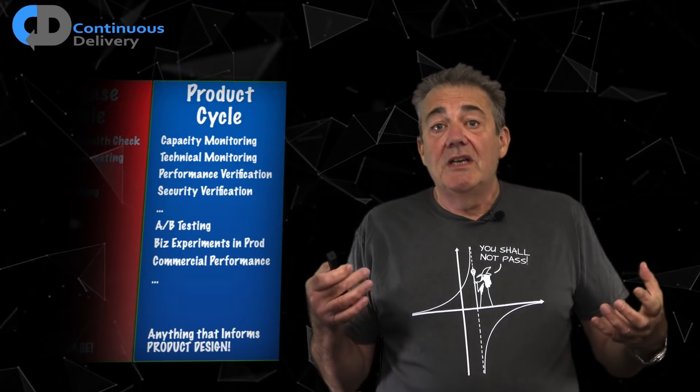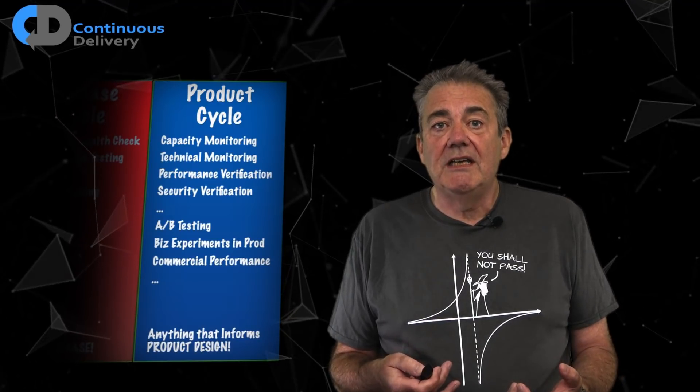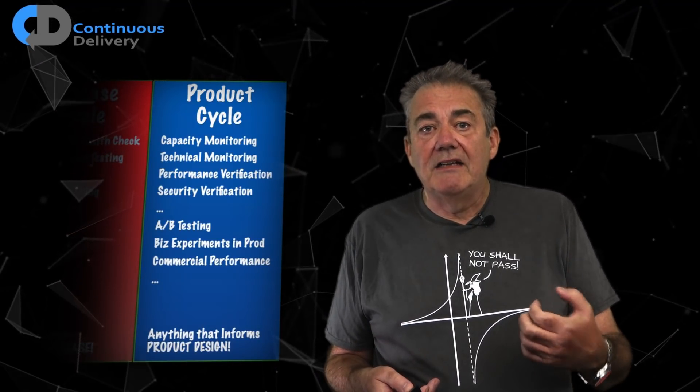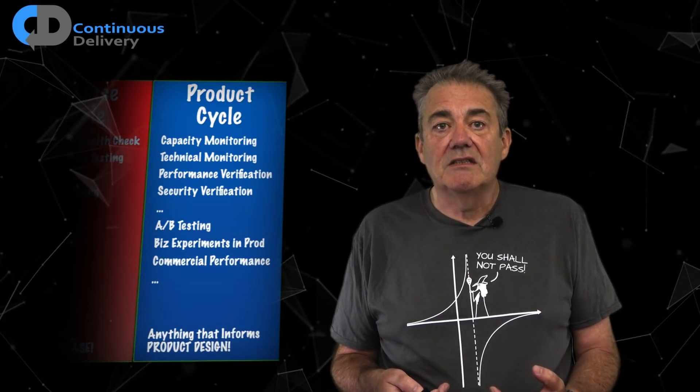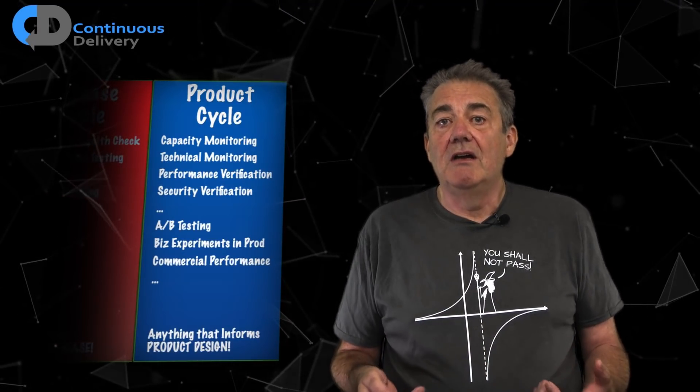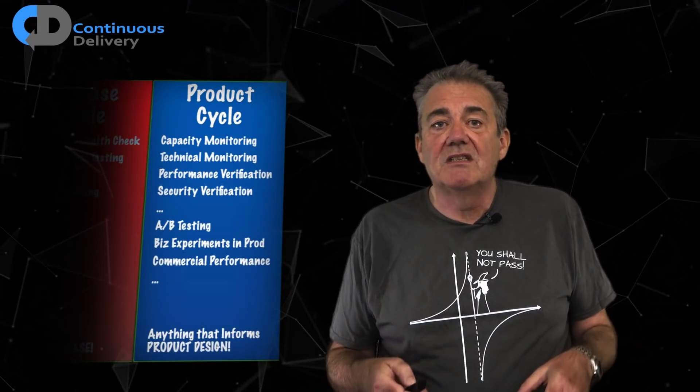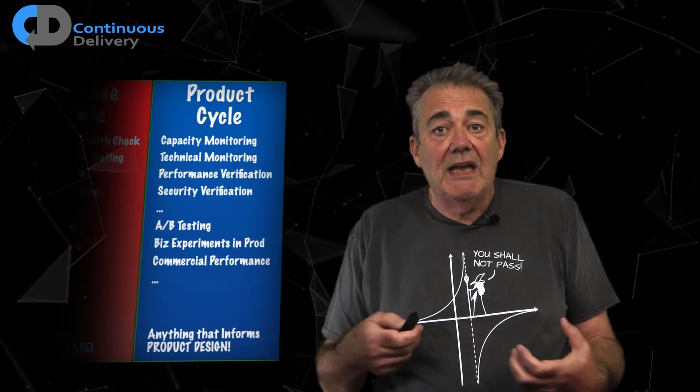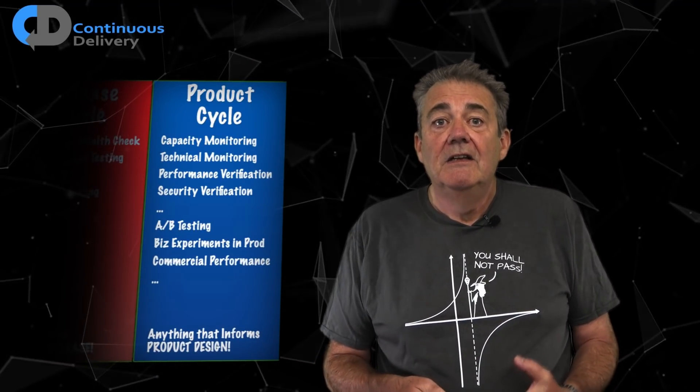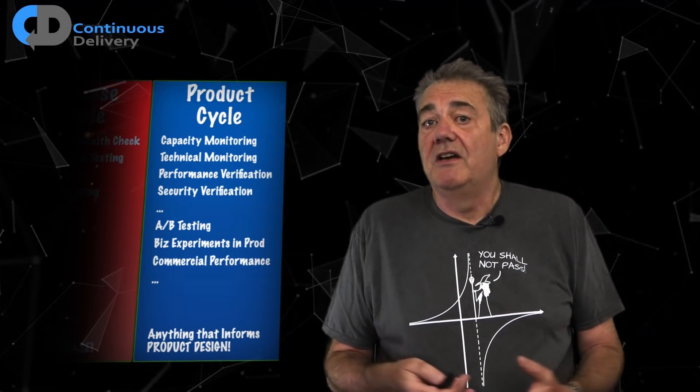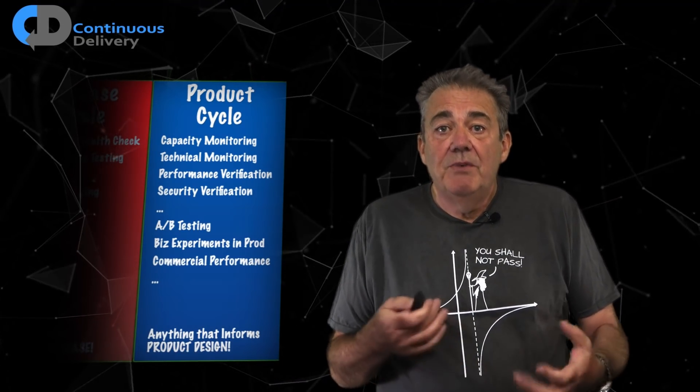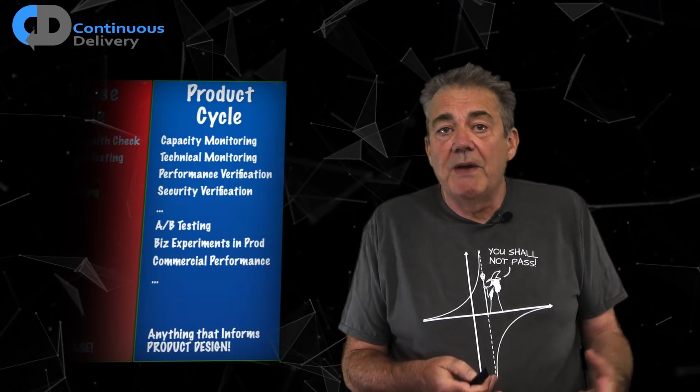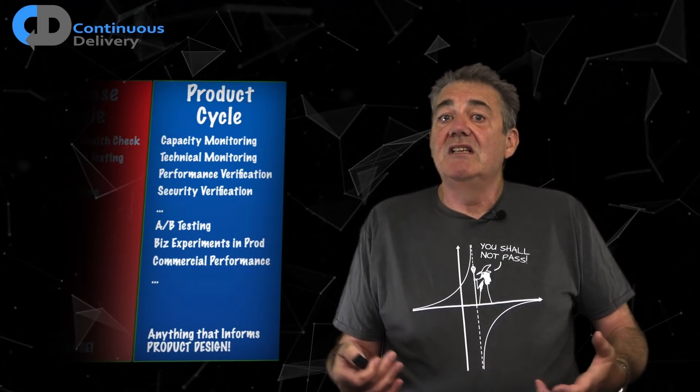Deliberately breaking parts of our system in production to confirm that it carries on delivering value. Again, we can certainly do some of this kind of testing pre-release. At LMAX, we had a suite of destructive tests. We'd run specific scenarios and then kill different parts of the system mid-scenario and then check to see that we hadn't lost any data. Or maybe that a failover had happened as we expected. But this tests the things that you expect to happen. What about the things that you don't expect?